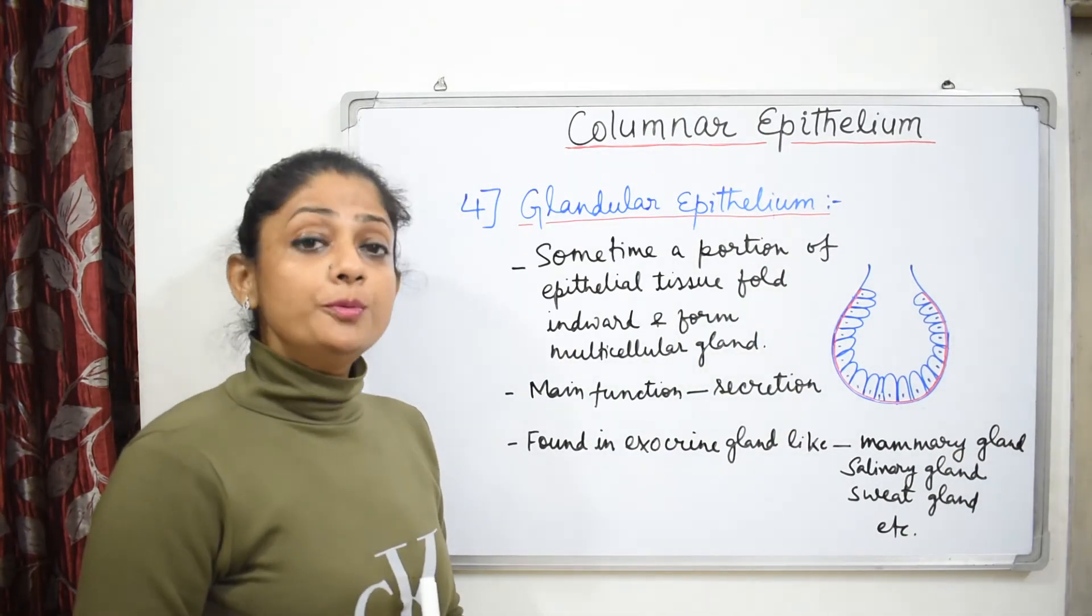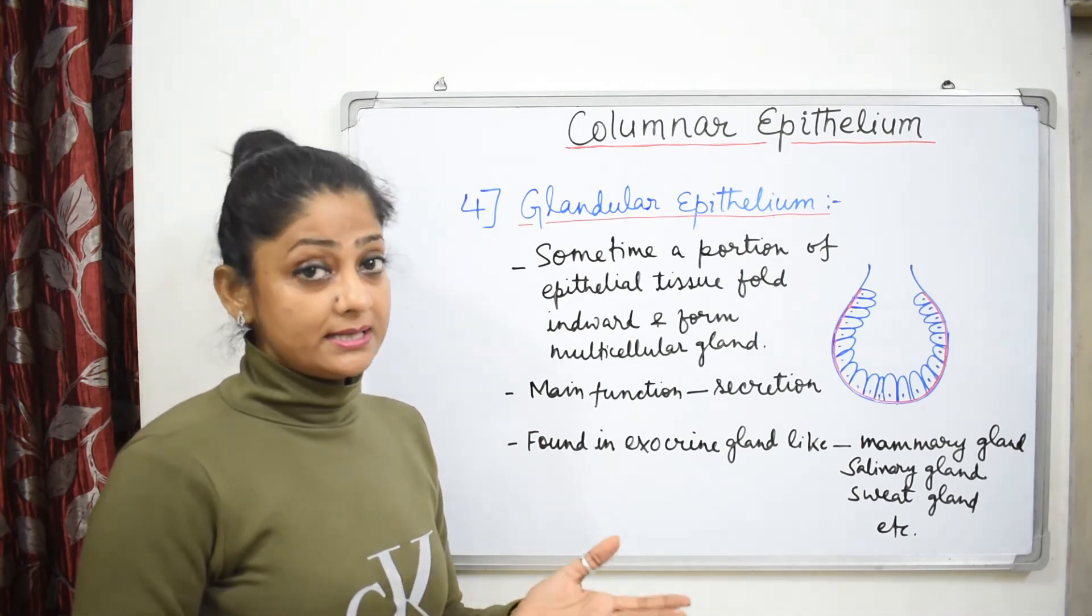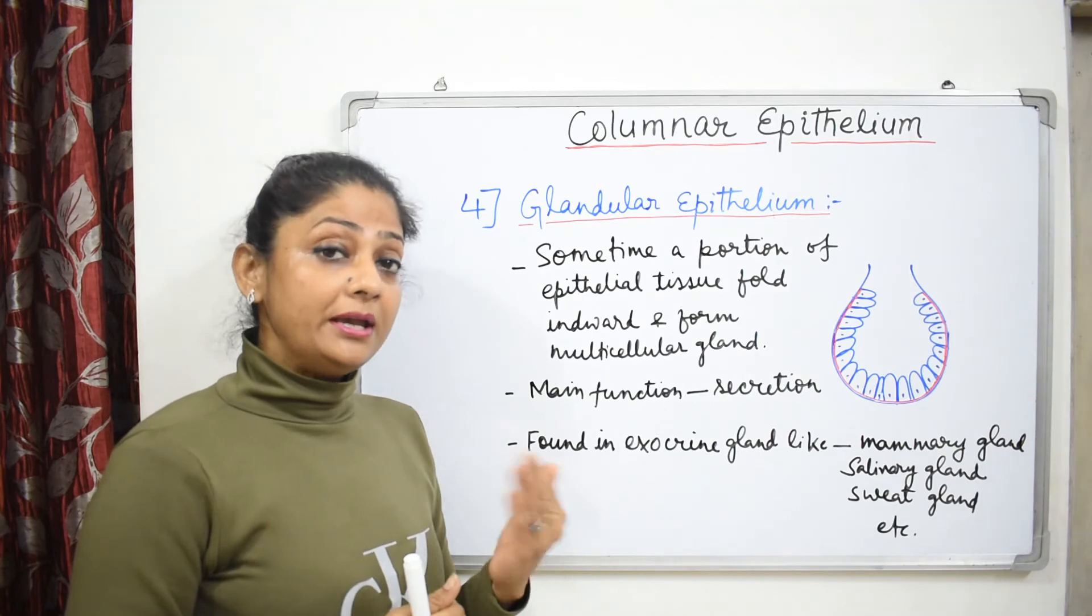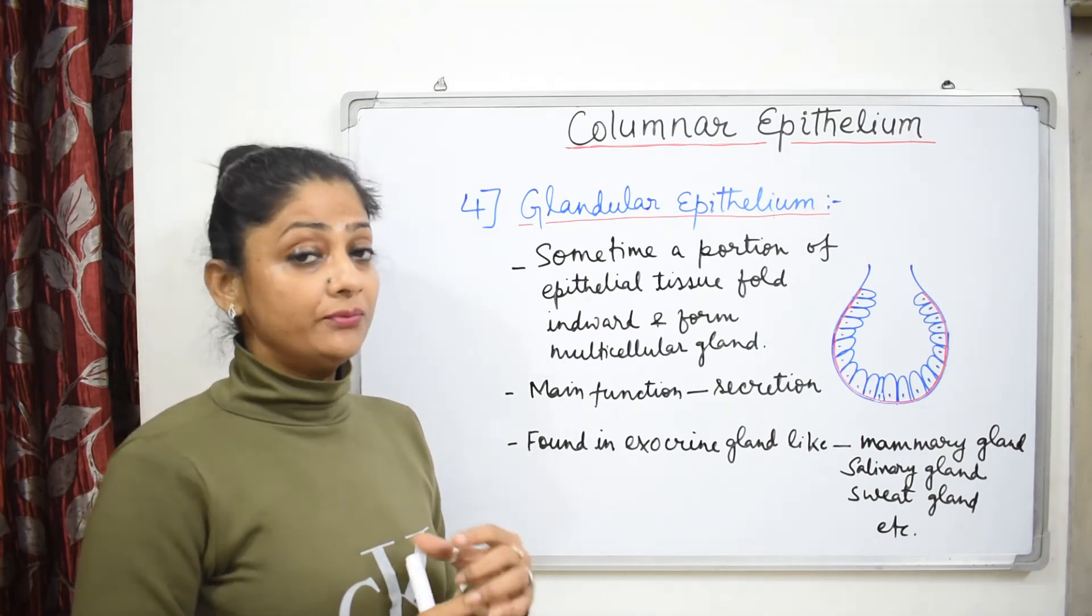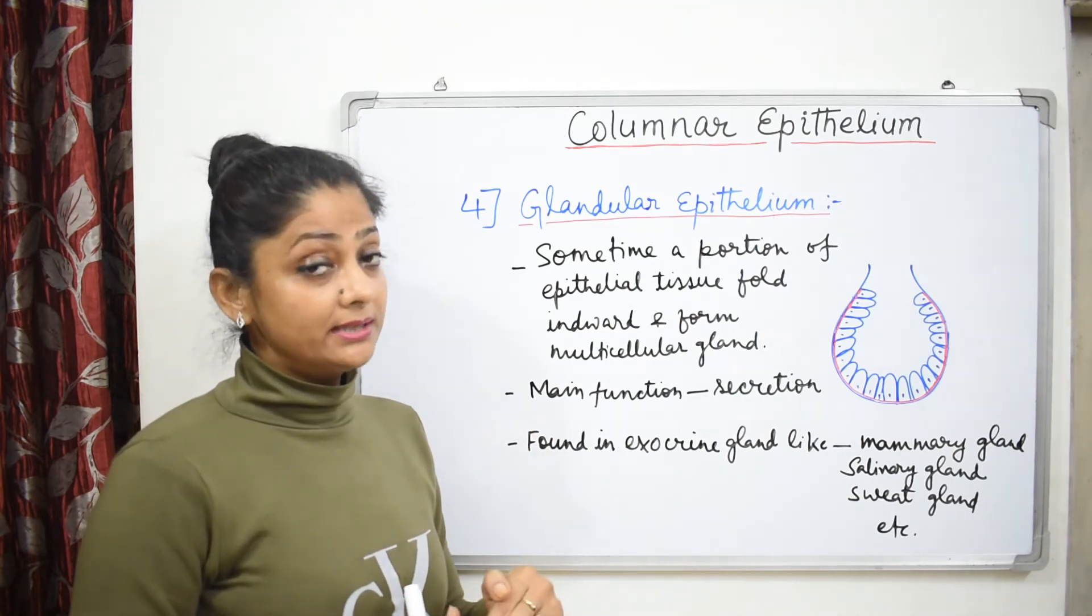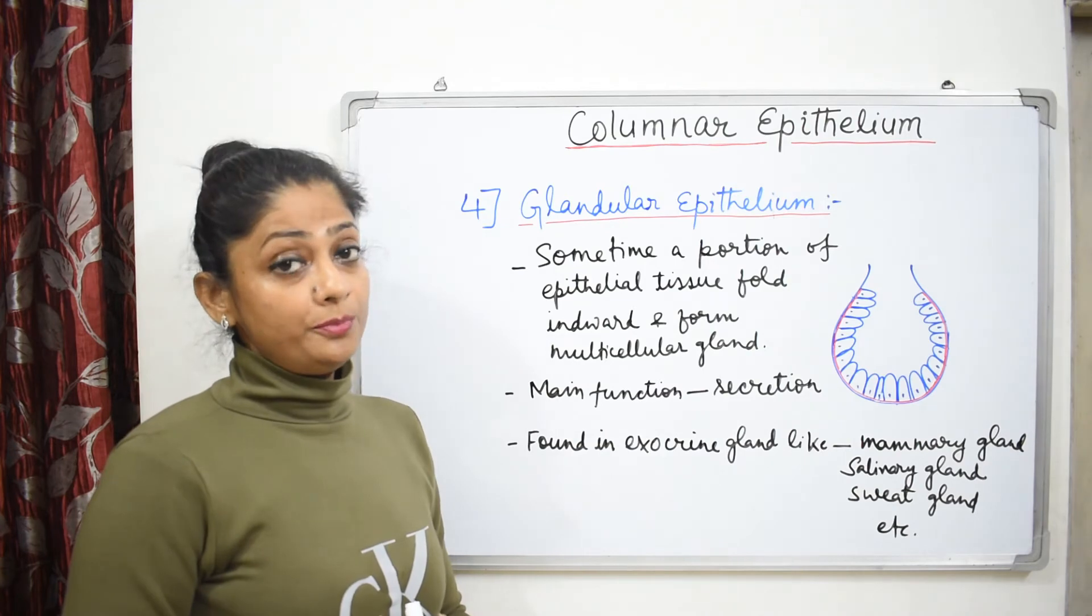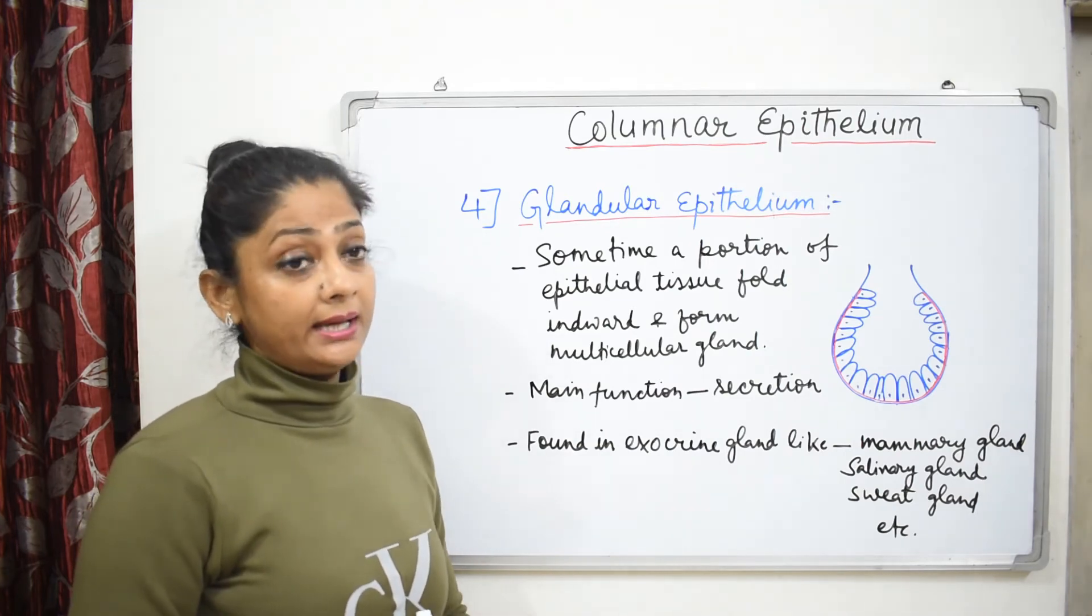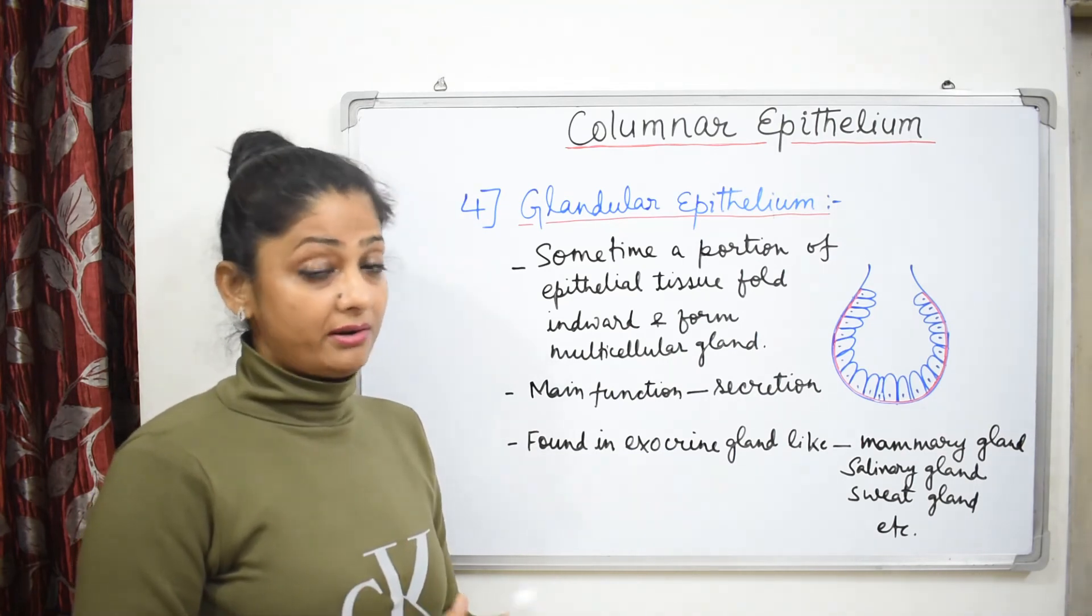Revision: Columnar epithelium is made of tall and pillar-like cells. Its main function is absorption and secretion. Simple columnar is single layer and it can be found in the intestinal lining. Stratified columnar is multi-layered and it can be found in such places where friction is increased such as anus and pharynx.